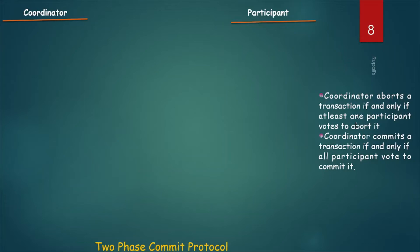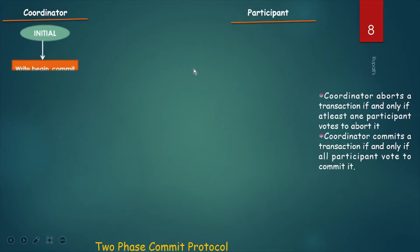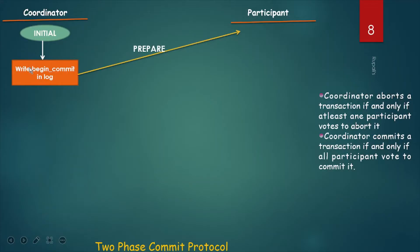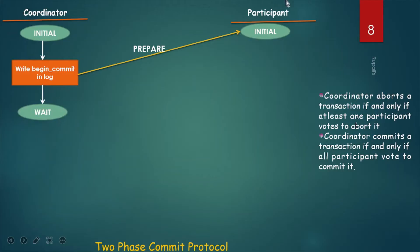We will discuss the flowchart of the Two-Phase Commit Protocol. There are two sites: one is the coordinator site and another is the participant site. The coordinator always initiates the transaction. The coordinator wants to commit, so it writes 'begin commit' in its own log and sends a message to the participant site to prepare to commit. After receiving this message, the participant site starts its transaction, and the coordinator goes to a wait state — waiting for the reply from the participating site.